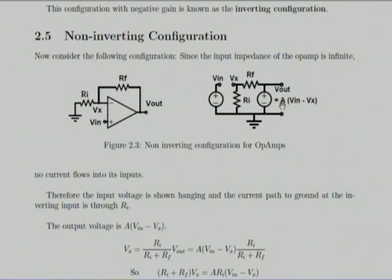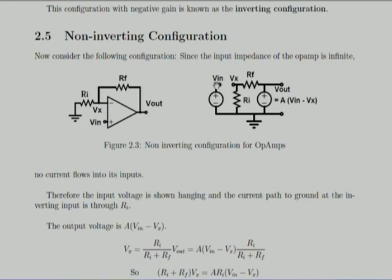Exactly the same thing happens with the non-inverting configuration. I again use a non-infinite gain. The equivalent circuit: this is the input voltage, and because the input impedance is infinite it is hanging in the air. There is nothing connected to it, and this is a voltage-dependent voltage source that sees Rf and Ri down to ground. The output is the difference of this voltage and this voltage — it is A times (V_in minus Vx).